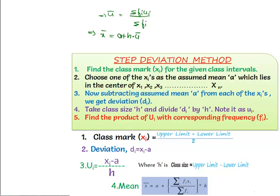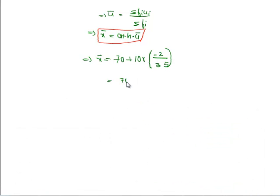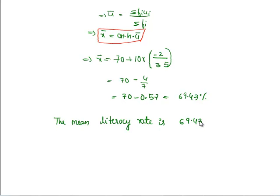Substituting the given values in the formula we get x bar is equal to a which is 70, plus h which is 10, into u bar that is sigma fi ui by sigma fi. We got sigma fi ui as minus 2 by sigma fi which is 35. Calculating it we get 70 minus 4 by 7, which is 70 minus 0.57, that is 69.43 percentage. The mean literacy rate is 69.43 percentage.